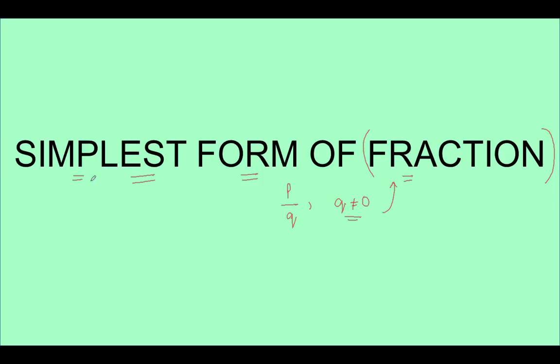When I say I have to find the simplest form of a fraction, what I mean is that the values of P and Q should be such that they cannot be divided by a common number any further.